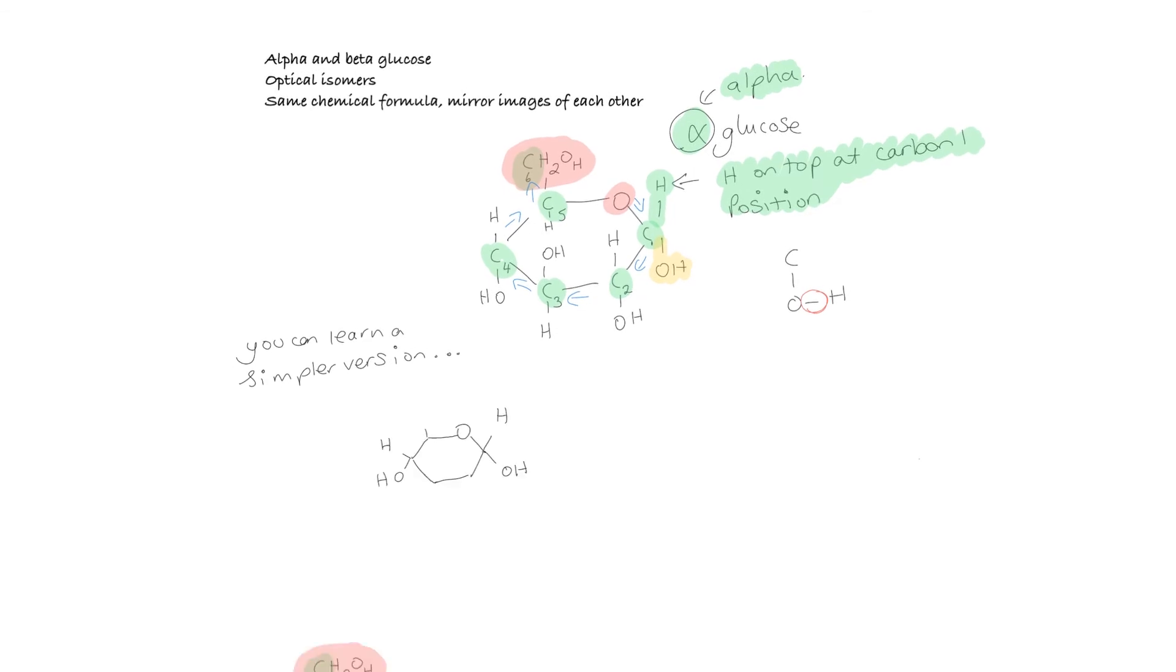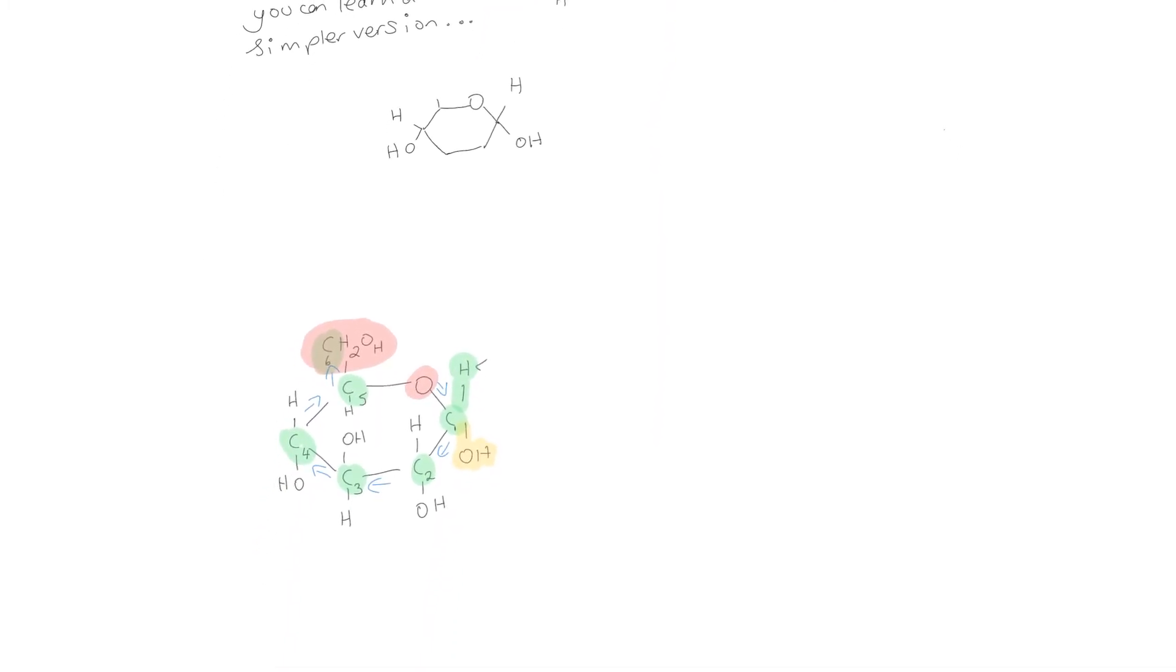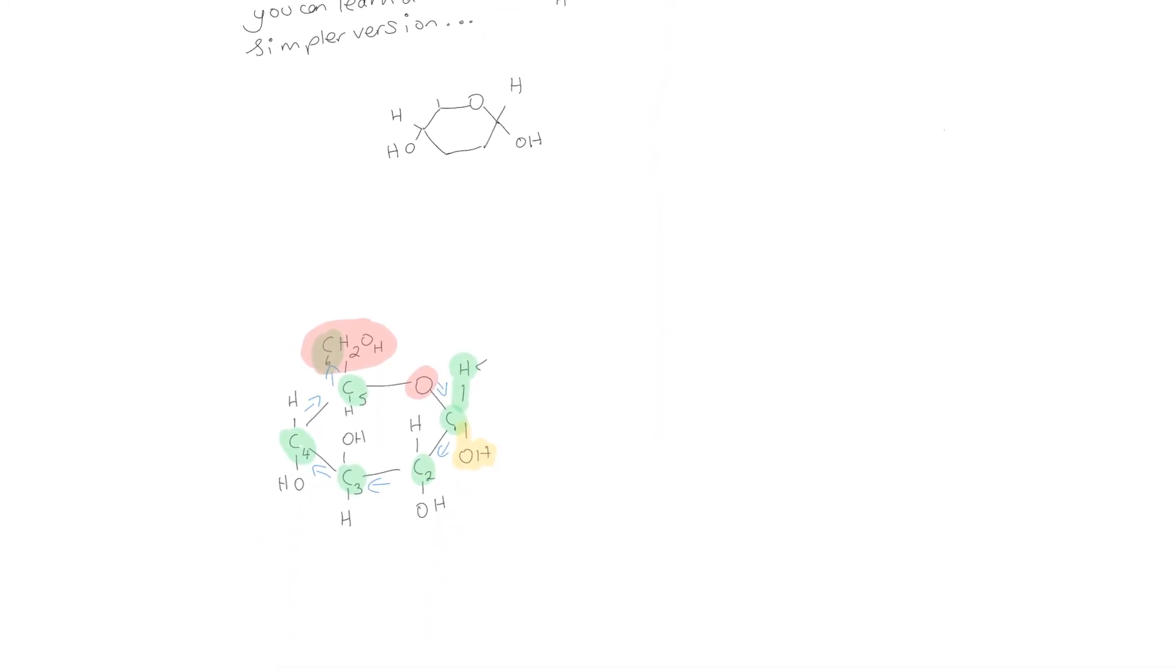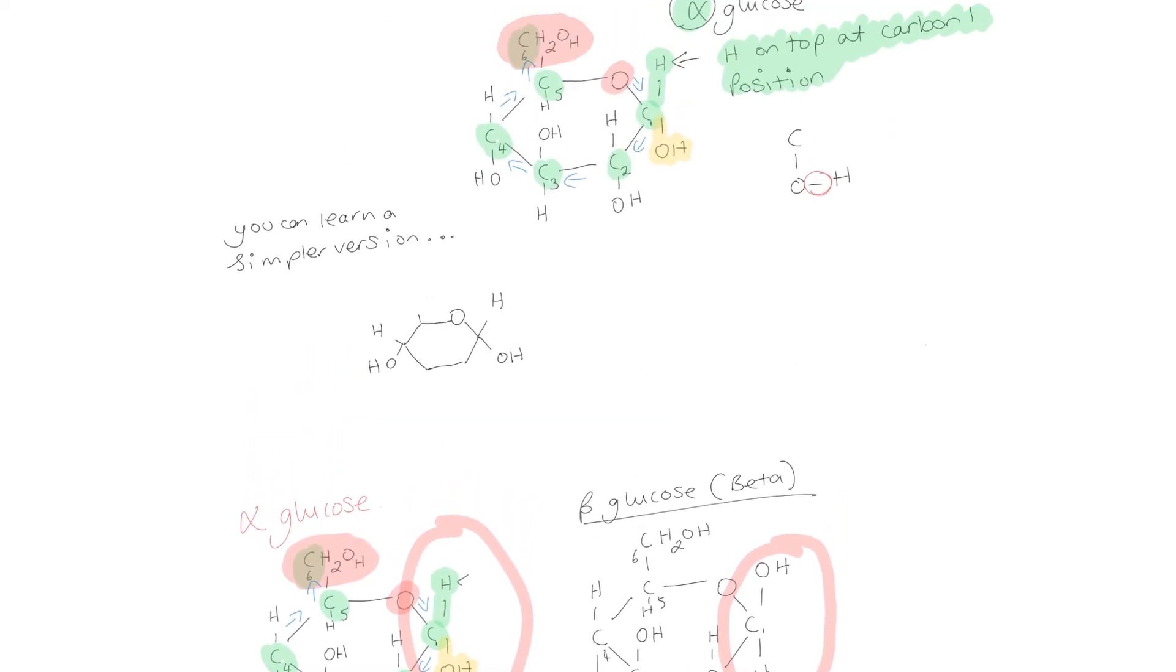Let's compare alpha glucose to beta glucose. Here's the alpha glucose we drew just a second ago. Let's draw our beta glucose alongside it. We can see that the only distinct difference between these two is the position of the H and the OH on carbon 1. Let's draw the simplified version of beta glucose next to the simple version of alpha glucose so we can see the difference.